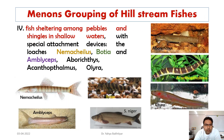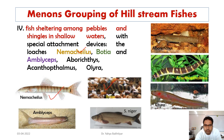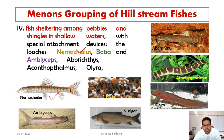Group 4 comprises fishes that shelter among pebbles and shingles in shallow waters with special attachment devices, enabling them to attach to the substrate. Examples include loaches such as Noemacheilus, Botia, Aborichthys, Acanthophthalmus, Olyra, and Amblyceps — with Noemacheilus, Botia, and Amblyceps being the most important representatives.